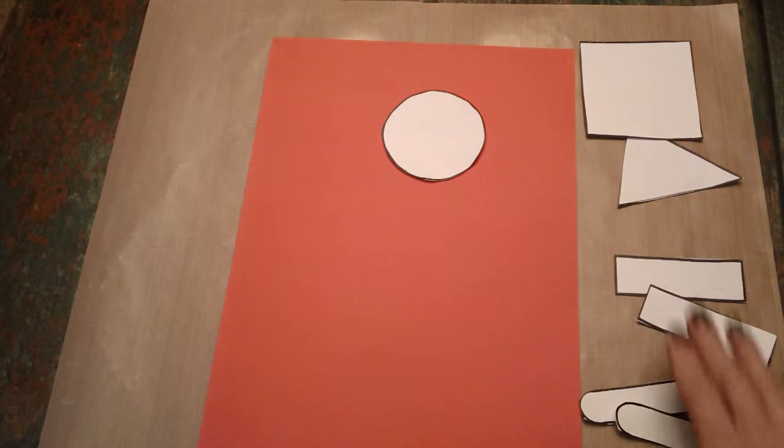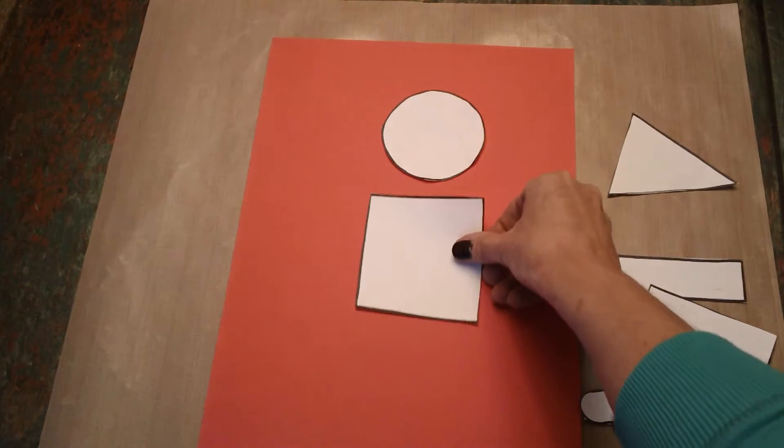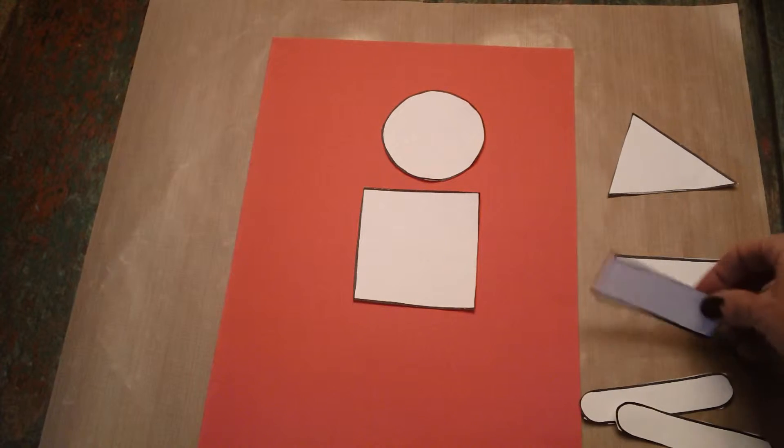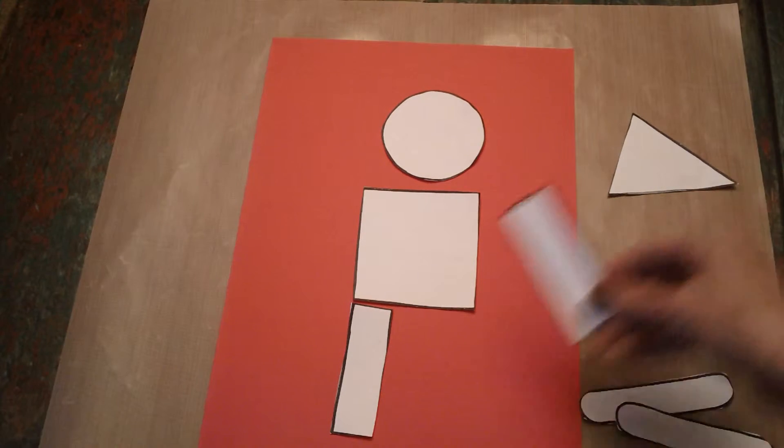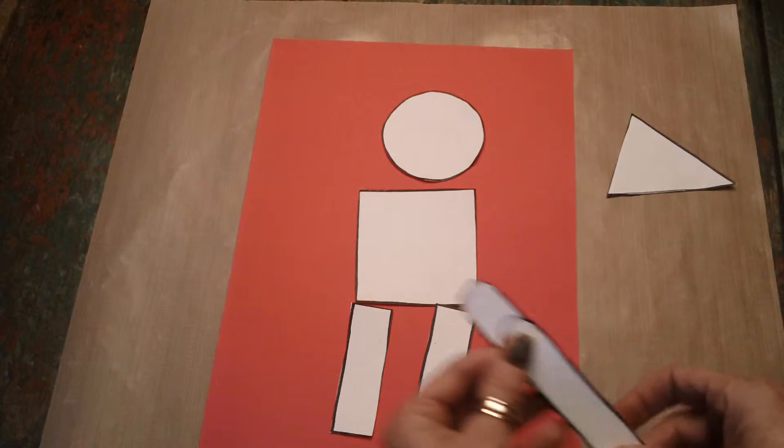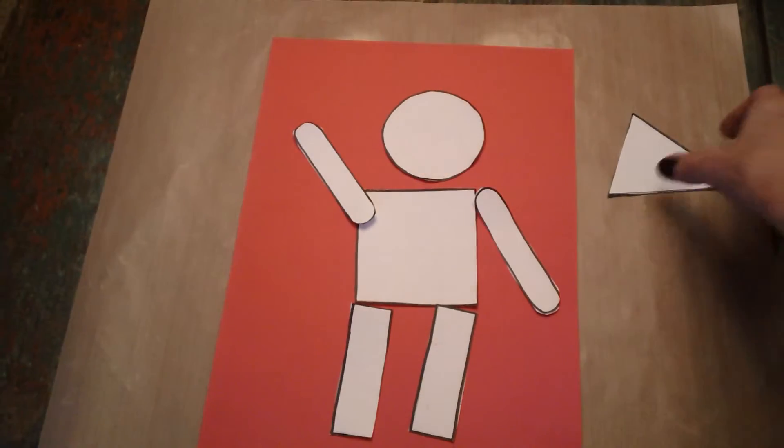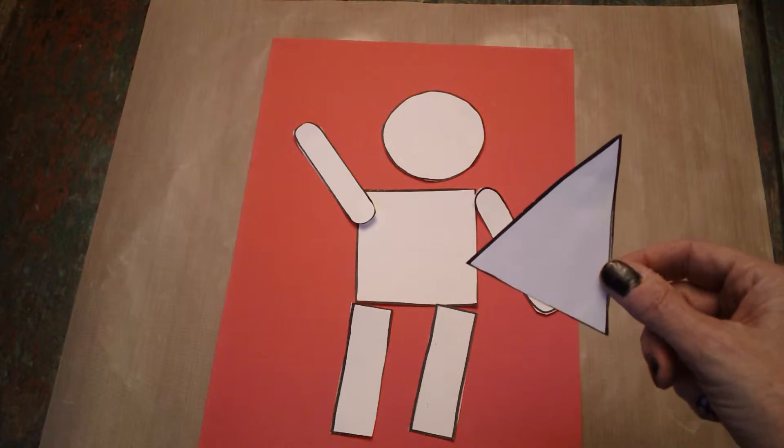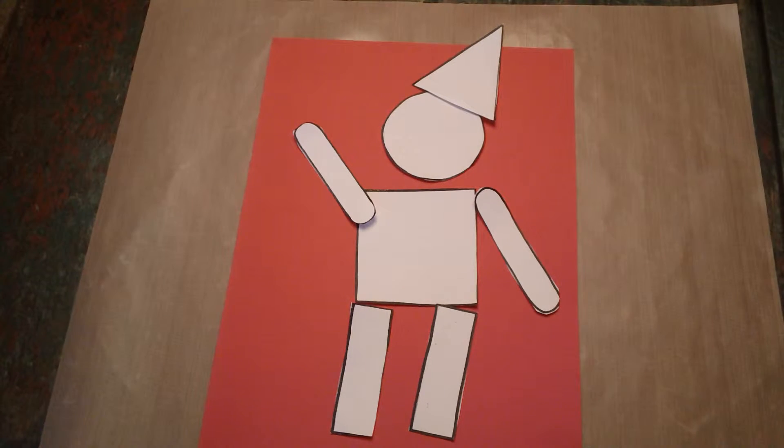What shape do you think out of the ones that are left here we might use for a body? Yeah, probably the square. I think the rectangles might be great for legs and maybe the ovals for arms. What do you think we could use this for? Yeah, maybe a hat. Okay, so there's my shape person.